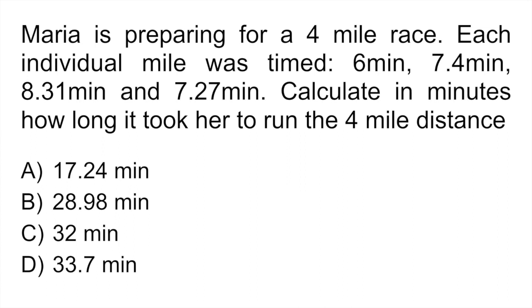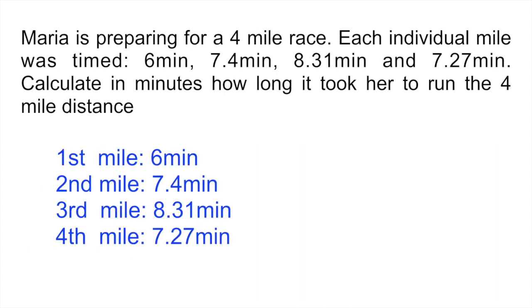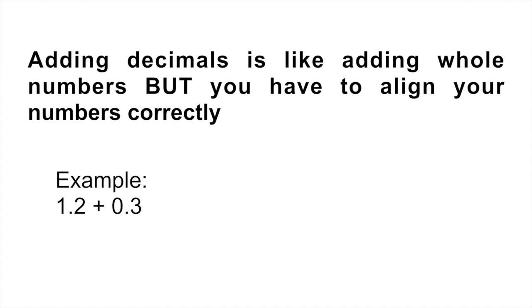They're asking you to calculate in minutes how long it took her to run the four-mile distance. This is a question they might ask for the portion of the GED where they do not allow a calculator. What you have to remember is that when you are adding numbers that have decimals, you have to make sure that you align your numbers and your decimal points correctly.